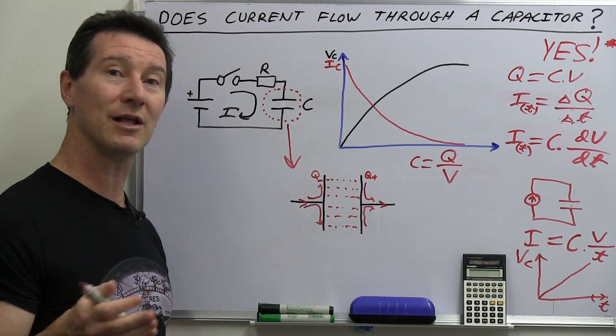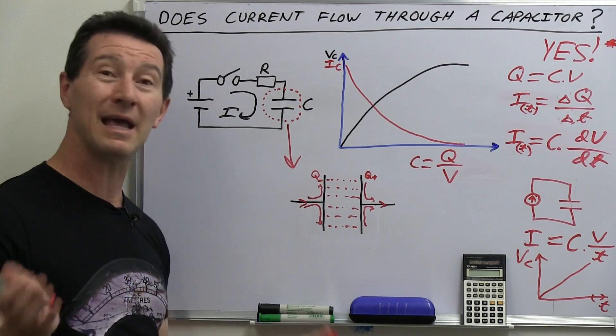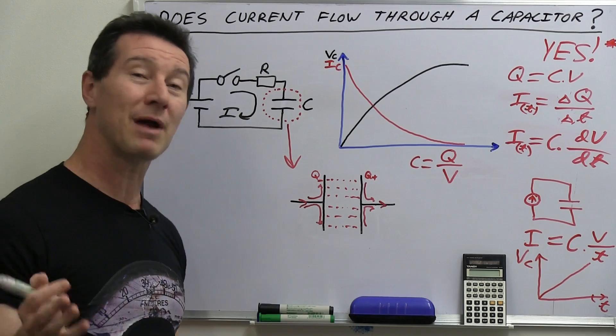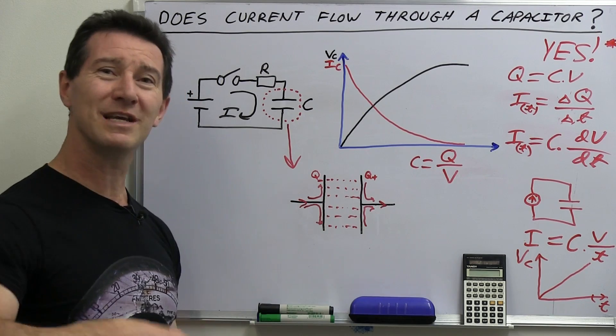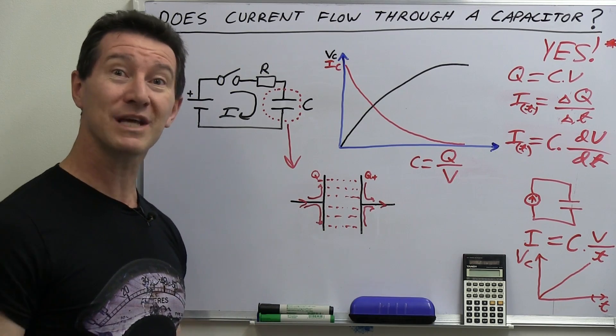But when you look at it in terms of electric fields and how it's two separate plates and an insulator in between. That's what a dielectric is. It's an insulator, be it air or mica or ceramic or whatever material it happens to be. No electrons can actually flow. What's going on?